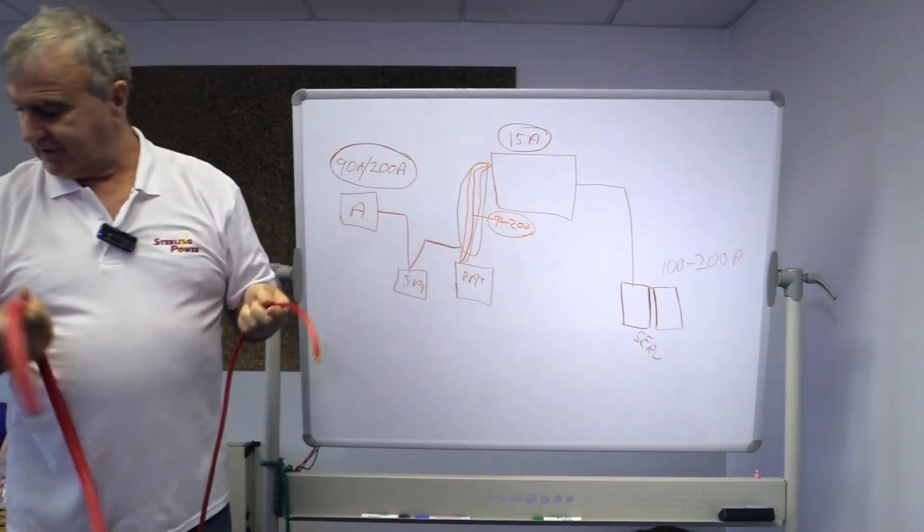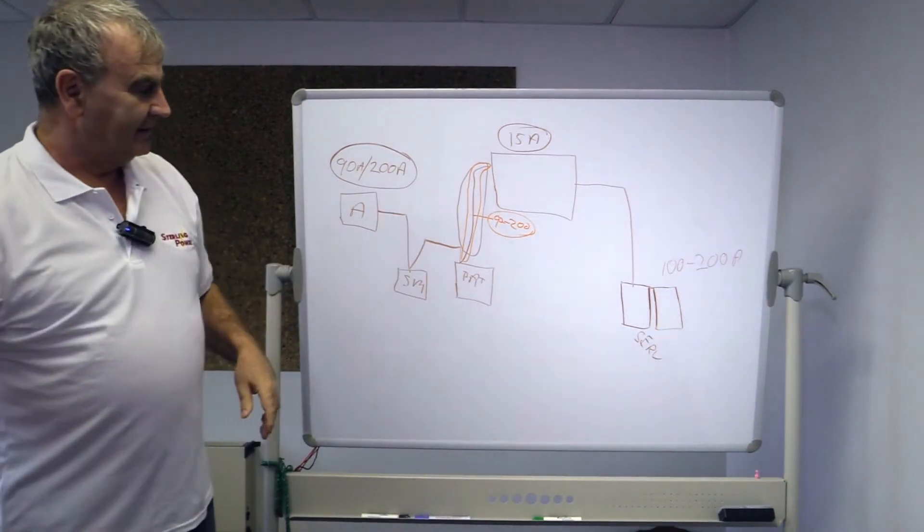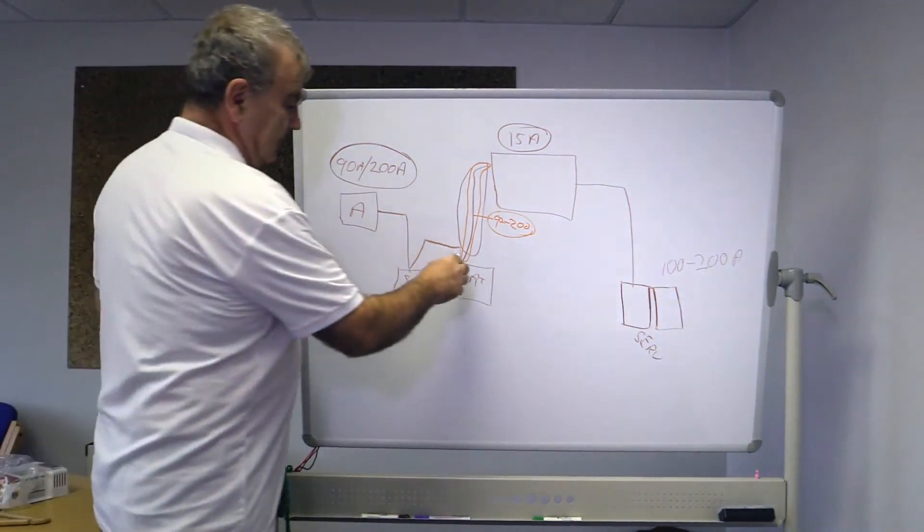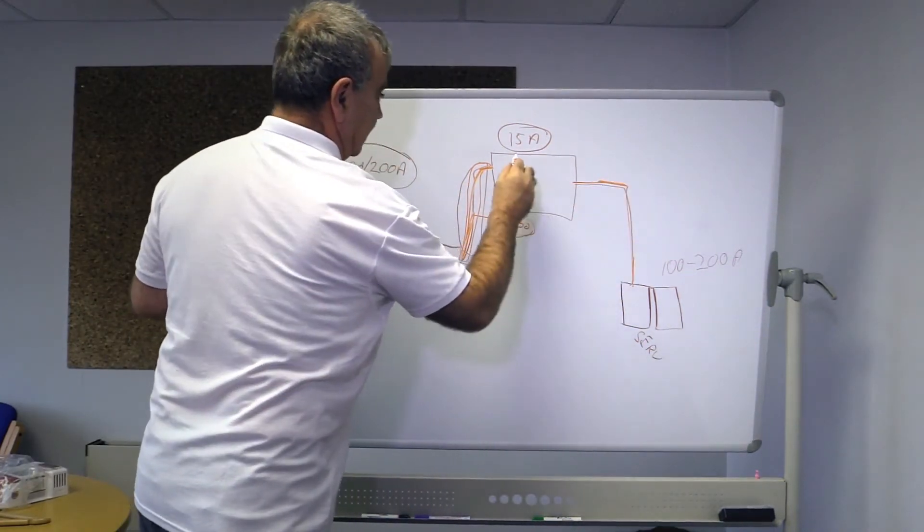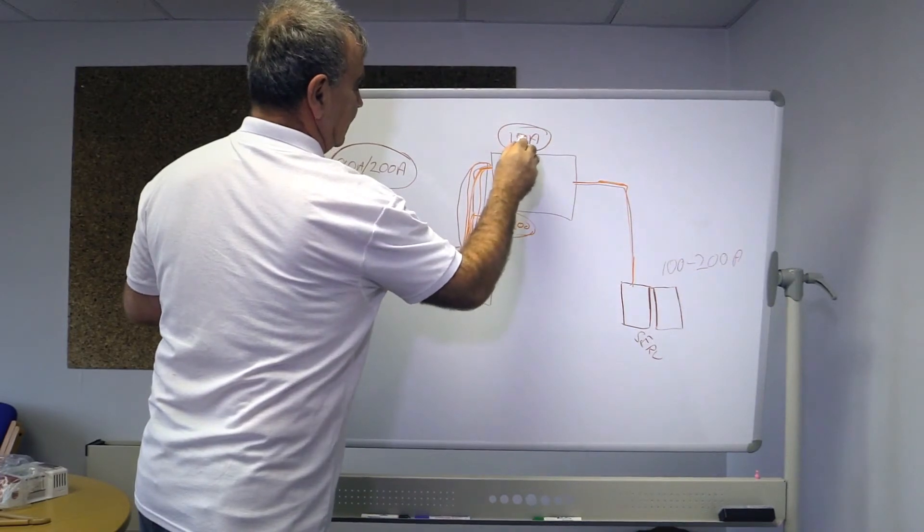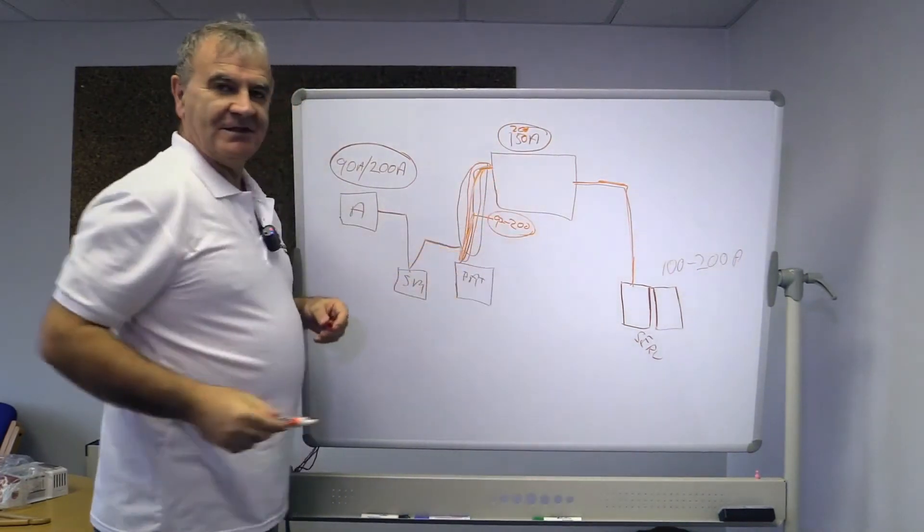So for the sake of the extra cost to do the job right, in other words put a decent cable here, a decent cable here, and a decent cable here, and then a decent box here that can carry 150 to 200 amps, the charging system would have worked. You would have got what you thought you were buying when you first bought the vehicle.